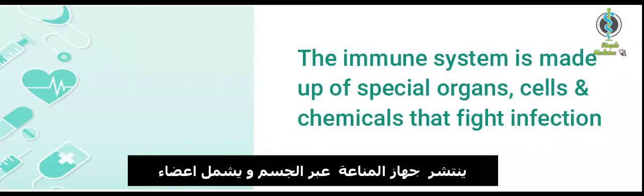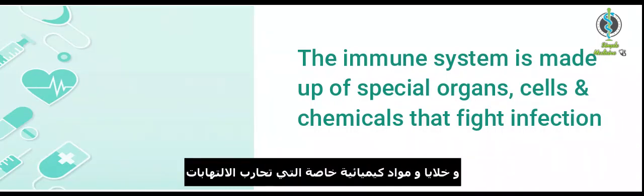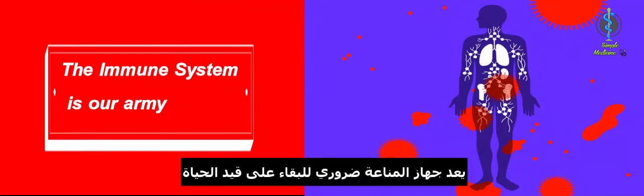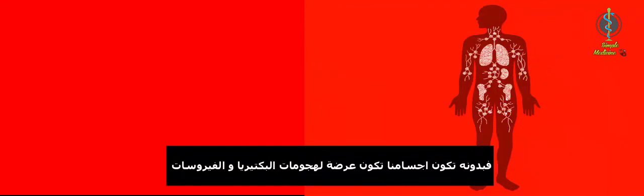The immune system is spread throughout the body and made up of special organs, cells and chemicals that fight infection. The immune system is essential for our survival. Without it our bodies would be open to attack from bacteria, viruses and more.